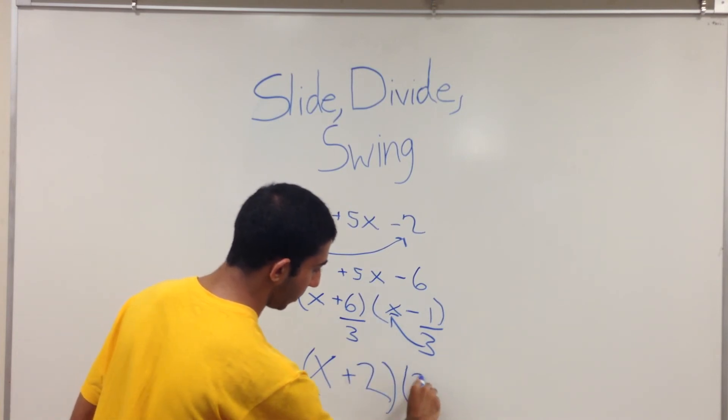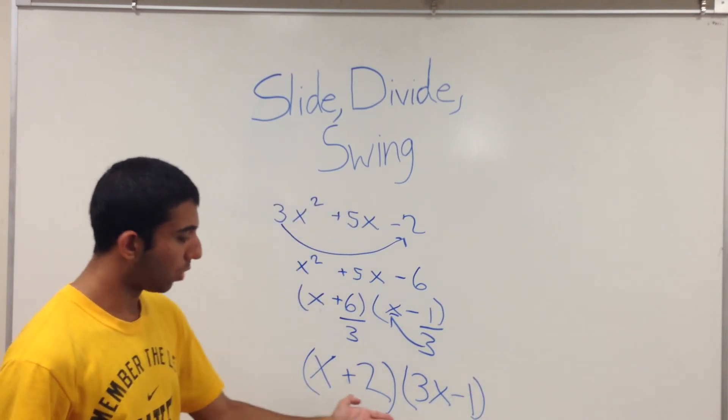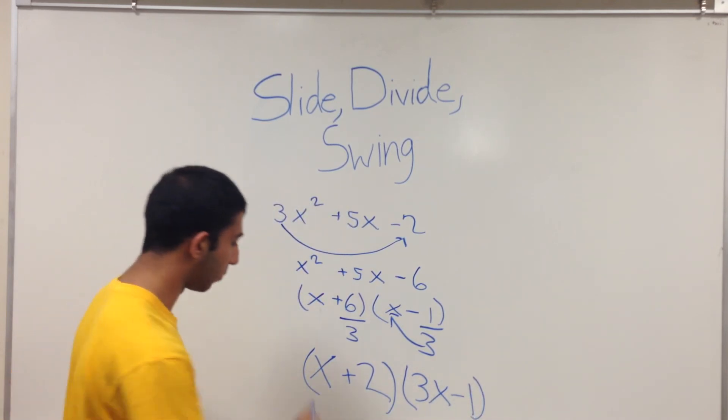So your answer will be 3x minus 1. And this right here below will be your fully factored form.